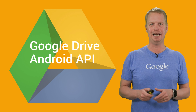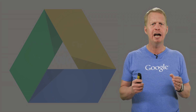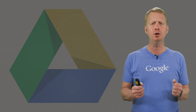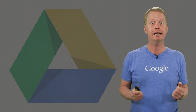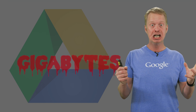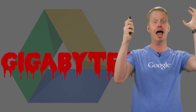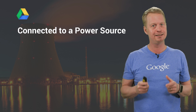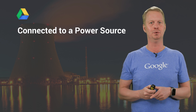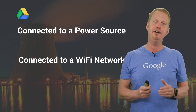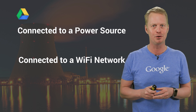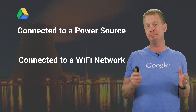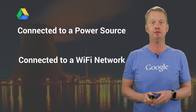Starting off with the Google Drive Android API. Imagine that your app needs to upload lots of drive data — let's say gigabytes. In that case, you may want to ensure that you're connected to a power source and you're on a Wi-Fi network. Now you can programmatically specify these types of conditions for uploads.